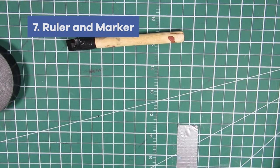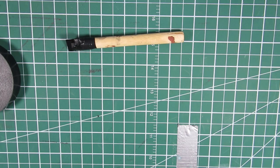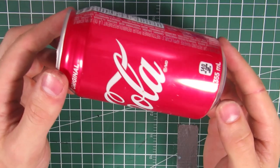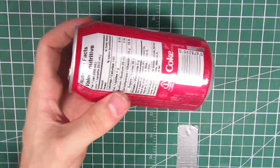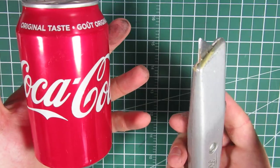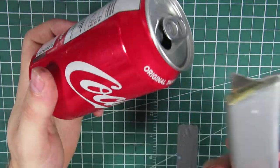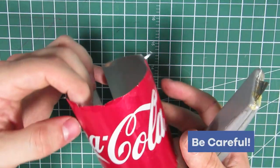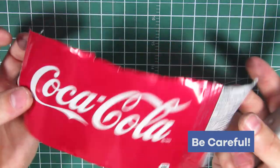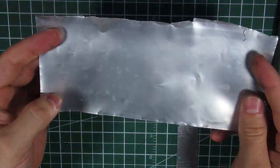First thing you're going to do is grab your can and your cutting device, exacto knife, whatever you want to call it. You're going to make some cuts here and just remove the main part of the can like so.